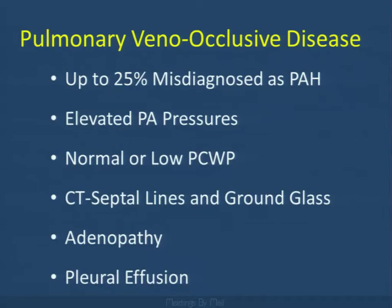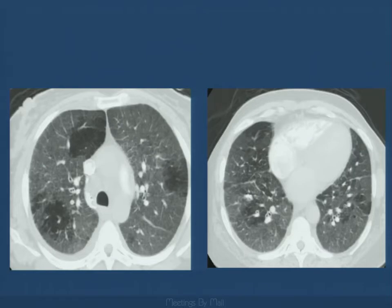Pulmonary veno-occlusive disease is a rare condition, but up to 25% are misdiagnosed as primary pulmonary hypertension. They have a normal or low pulmonary capillary wedge pressure. CT may demonstrate septal lines and ground-glass centrilobular nodules in these individuals, so it's something to consider if you have pulmonary hypertension with unusual-looking lung disease.